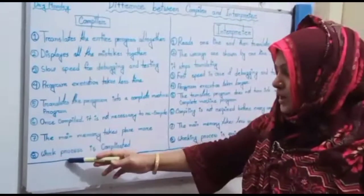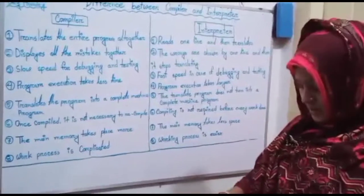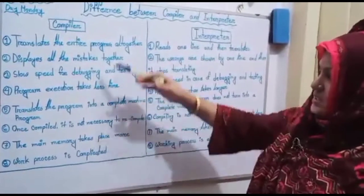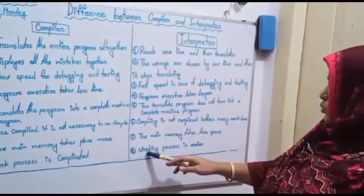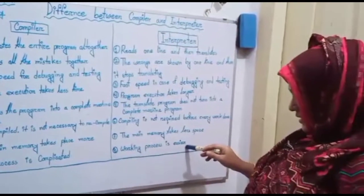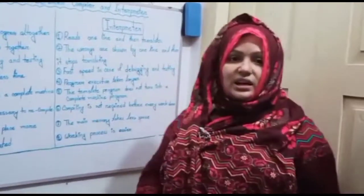Number eight: compiler work process is complicated, that means error detection is difficult. Interpreter number eight: working process is easier, that means error detection is easier.